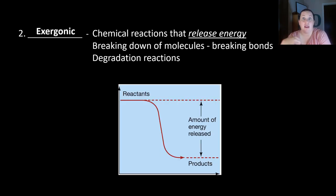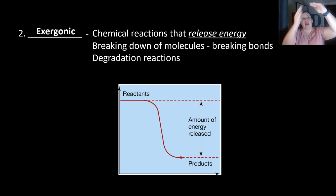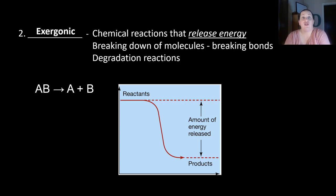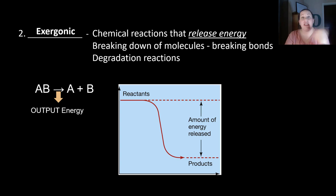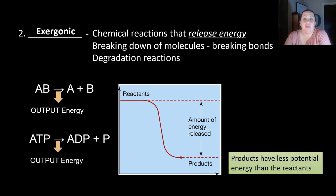On the other side, exergonic reactions — 'exo' means exiting/leaving, 'gonic' means energy — are chemical reactions that release energy. These occur when we break down molecules; breaking bonds releases energy and these are degradation reactions. The reactants start with more energy, and when we break them apart energy gets released, so the products have less energy than the reactants. For example, if we take ATP and break it back into ADP and a phosphate, energy is released.